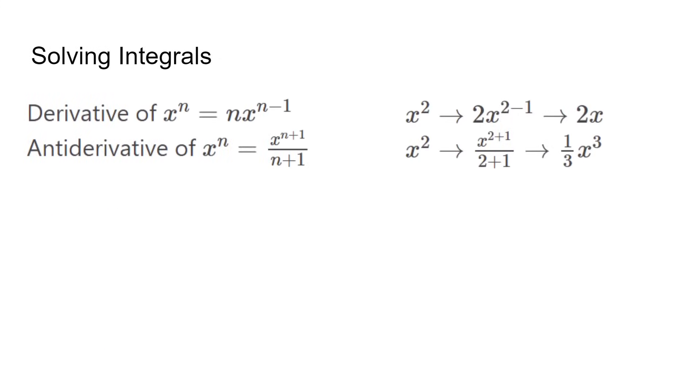The simplest integral to solve is reversing the power rule. By taking the derivative of x to the power of n, such as x squared, we first multiply by the n, then subtract the power to make it n minus 1. To take the anti-derivative, we reverse the process by adding 1 to n before dividing by n plus 1. We get 1 third x cubed.